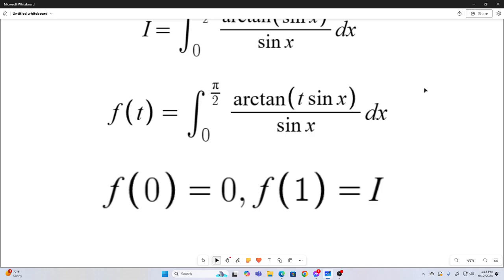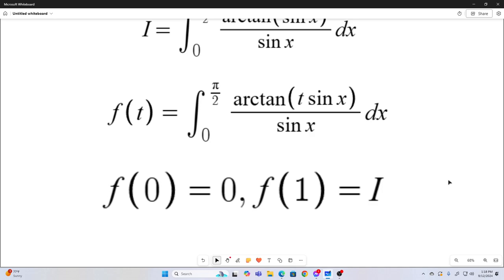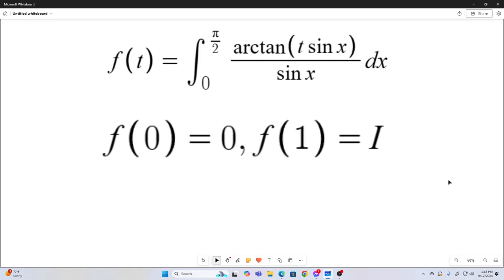But first, we'll notice that if we evaluate it at the point t is equal to 0, we'll get 0. Because 0 times sine x is 0. And then our tangent of 0 is 0. 0 over anything is 0. The integral over any bounds of 0 is just 0. And also, if we plug in 1 for t, we'll just get back this integral. So f of 1 is equal to i. So we have f of 0 equals 0, and f of 1 is equal to our target integral.